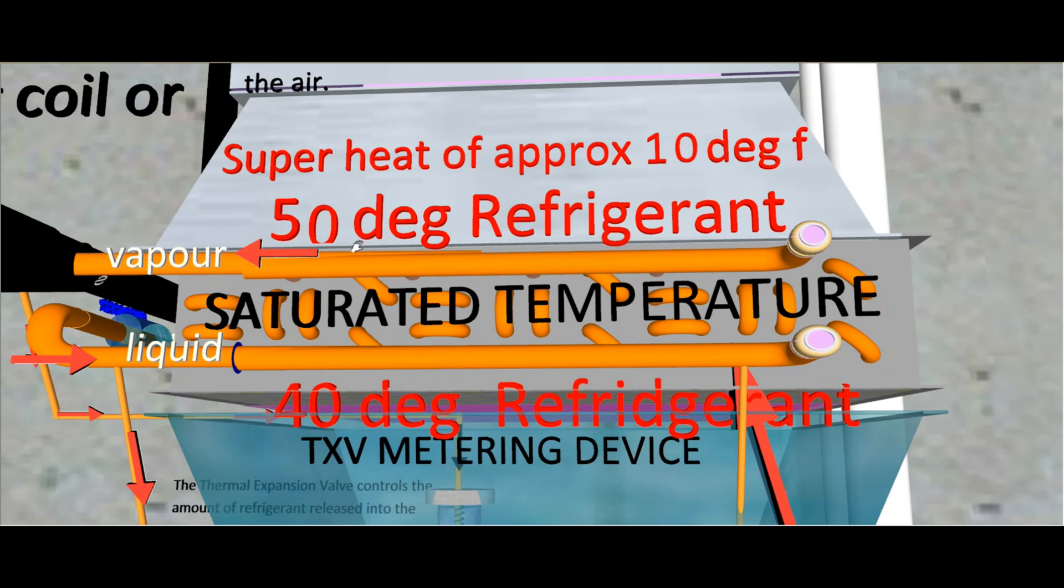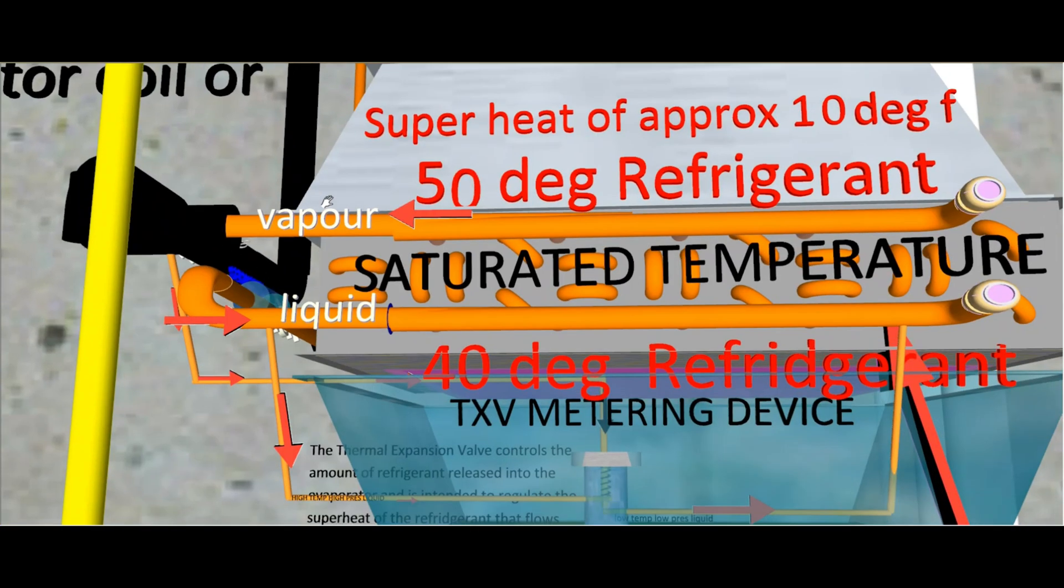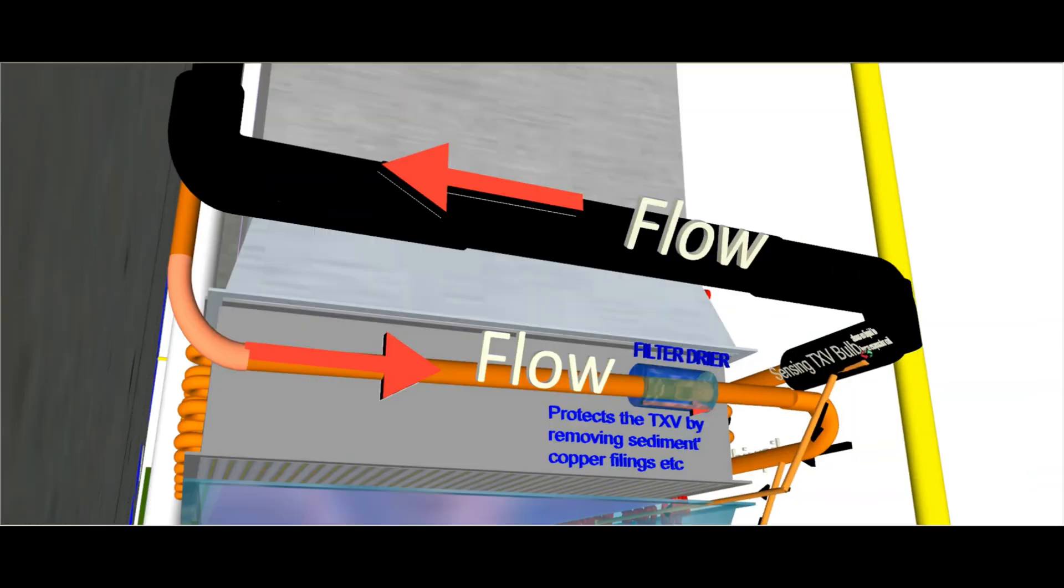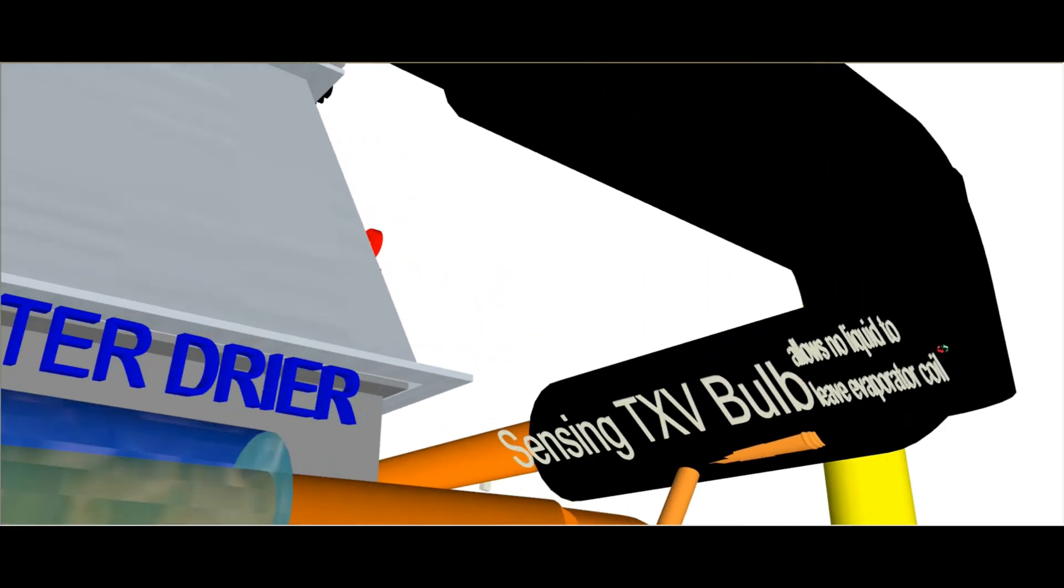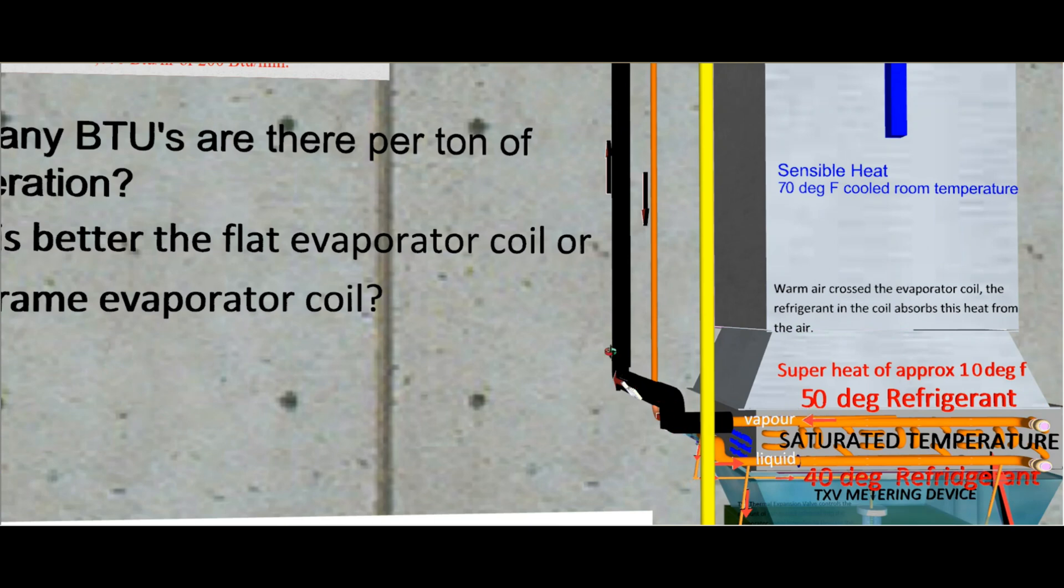So that's what we call superheat when it comes out of the coil. Now we have to make sure—or this valve that regulates it has to make sure—that there's only vapor coming out of this coil, right? Because when it comes out of the coil, it's going to go back to the compressor, and we can only handle vapor in the compressor. So this TXV valve actually has a sensing TXV bulb that is strapped adjacent to the suction line, and it allows no liquid to leave the evaporator coil. That's its job. We can't have any liquid come out of this evaporator coil. So now it's strictly vapor that's going to come. Now it's 50 degrees here, right, coming out.